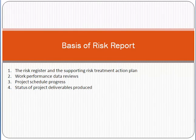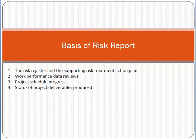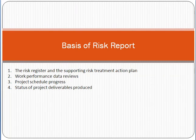The basis for making a risk report includes: the risk register, project plan, work performance data, reviews, schedule progress, and project status. As a project manager, the status report is a very basic factor from which you can extract risks. For example, if tasks are not completing on time, you can flag that a particular task planned for the next four weeks may not complete due to a specific reason — and mention it as a risk.